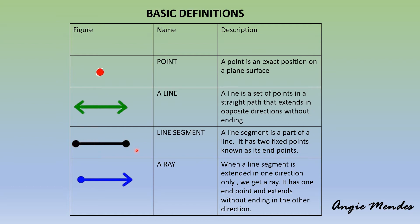A line segment is a part of a line. It has two fixed points which are known as its end points. Since it has two fixed points, the line segment can be measured because it has definite length.